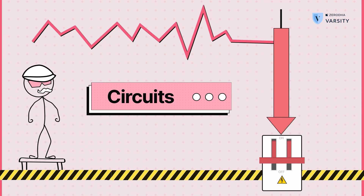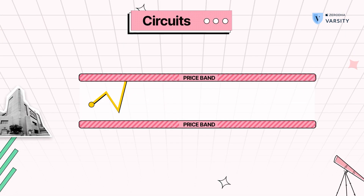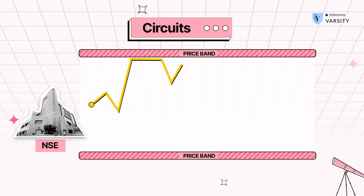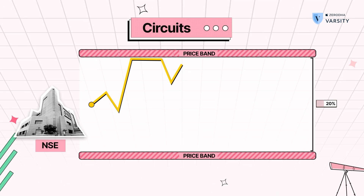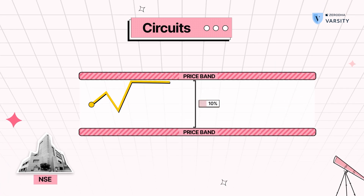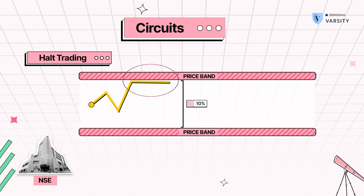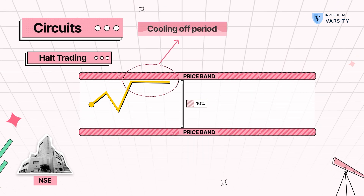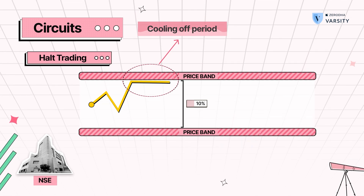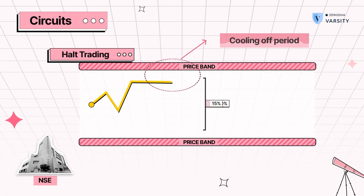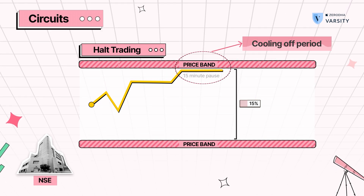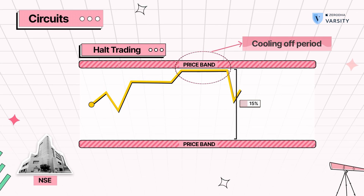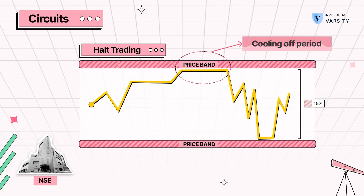Now we'll talk about circuits. Circuits are price bans set by the exchange to prevent a stock from making large price movements in a single day. These price bans could be 2 to 20% depending on the liquidity of the stock, but if any F&O stock hits a 10% movement for a single day, the exchange will halt trading for 15 minutes — this is called the cooling off period. The next circuit is 5%, so if the stock hits another 5% movement for the day there'll be another 15-minute pause before trading resumes. These price bands where trading halts momentarily and then resumes are called circuits, or the dynamic price range.